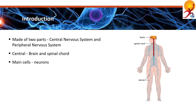The peripheral nervous system is made of nerves and neural ganglia. The meninges, or the three membranes that envelop the brain and the spinal cord, are also a part of the nervous system.